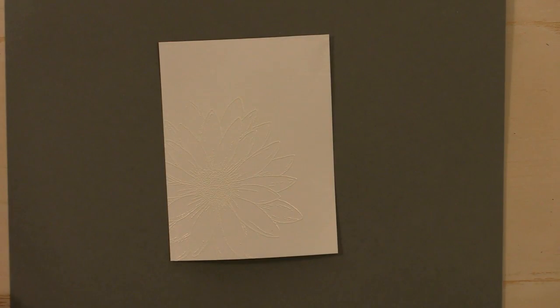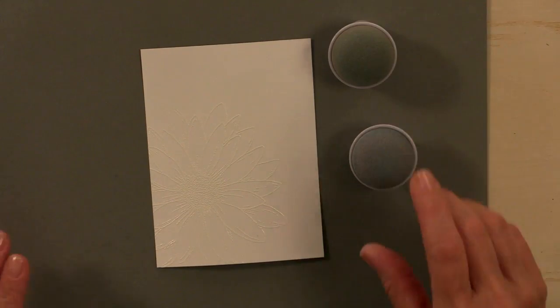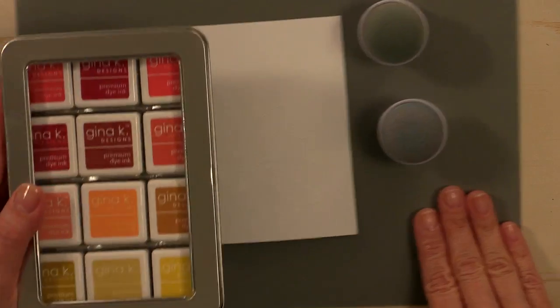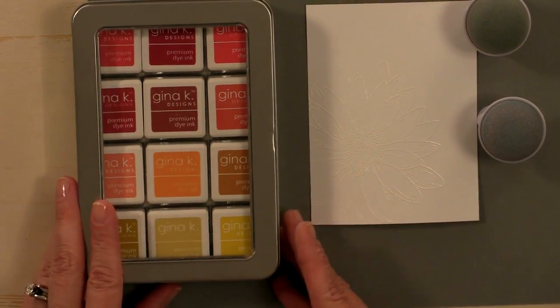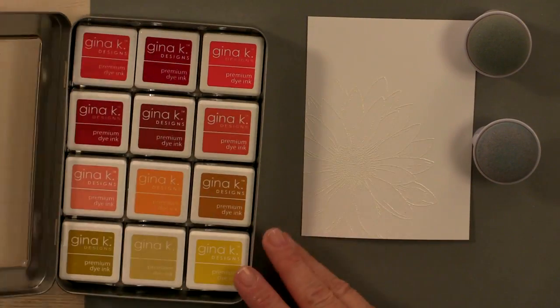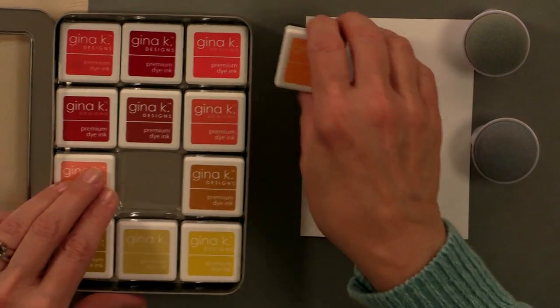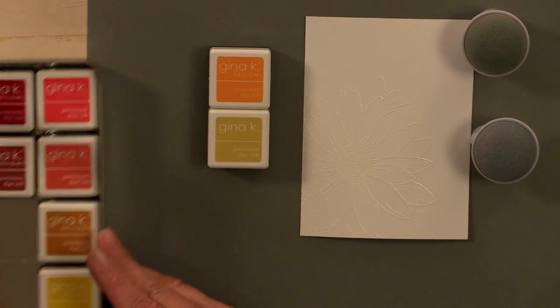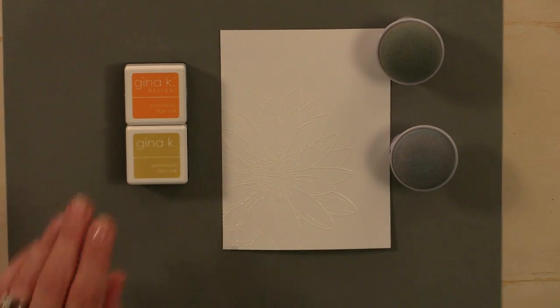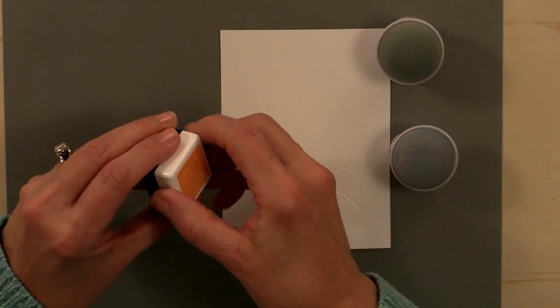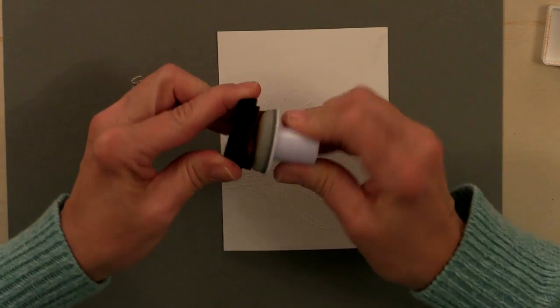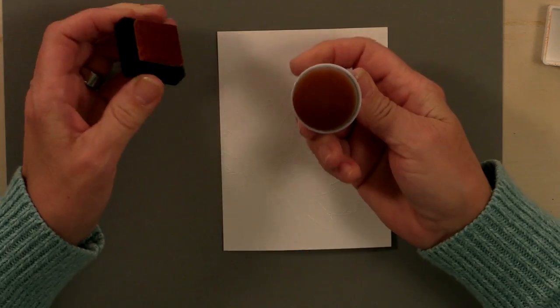All right. So I'm going to just emboss that whole daisy. This is huge. It's almost like a background stamp. It's beautiful. Okay. So now I've done that. And now I'm going to grab a couple of sponge daubers. And I'm going to pick a couple ink colors. Now I have all my cubes kind of in rainbow order in these little Tim Holtz tins. And I'm going to choose the sweet mango and some sweet corn.